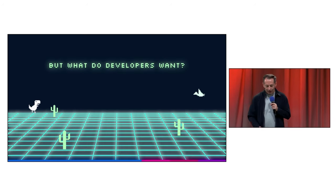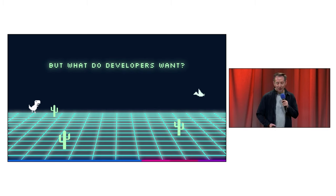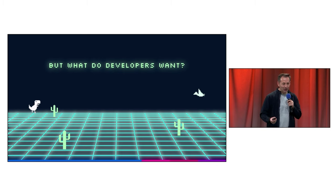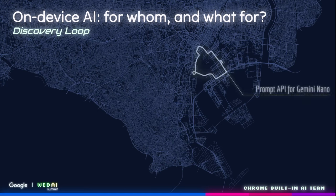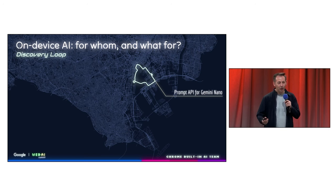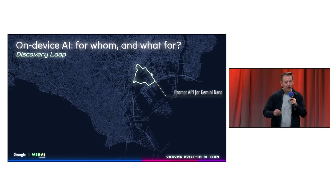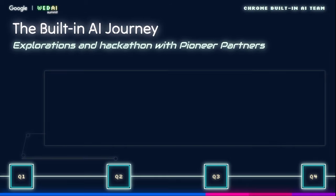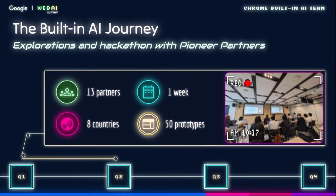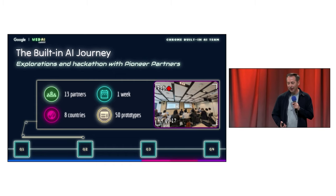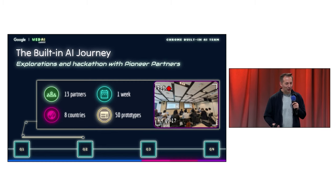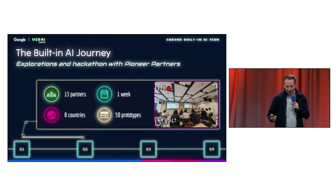We've talked about the challenges and our approach. Now comes the crucial question: what do you developers want to solve? We built what we call a discovery loop with an experimental prompt API for Gemini Nano. Why a prompt API? Because that's the best way for developers to explore the potential — you can talk to the model, get a response, explore use cases, and tell us what could potentially work. We didn't keep this party just in Tokyo — we had partners from eight different countries joining us and a one-week hackathon with 50 incredible prototypes.